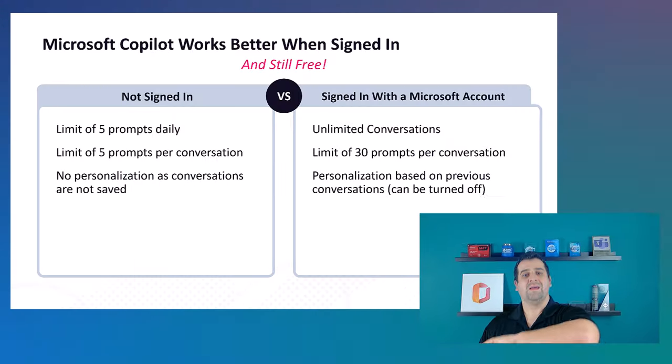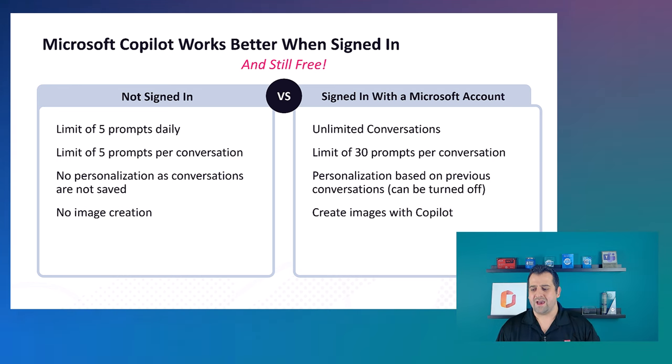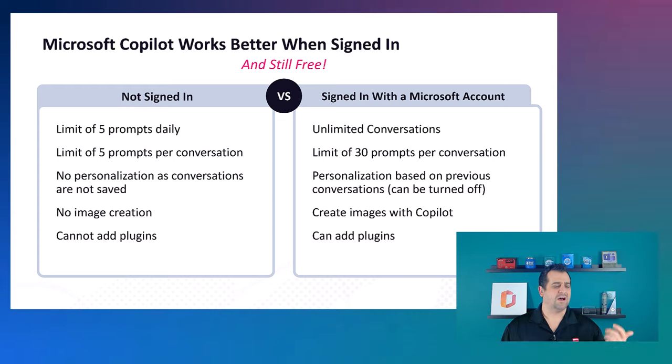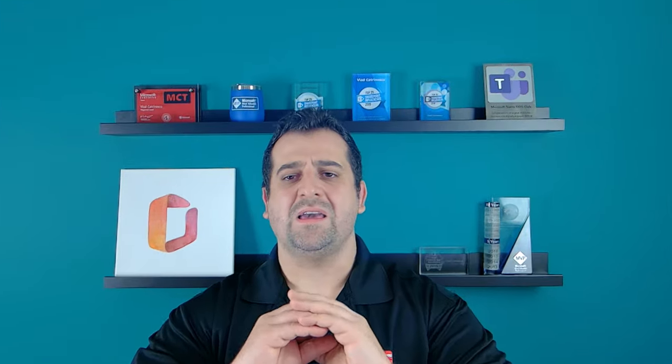Some of you might not be a fan of having your conversation saved in Microsoft Copilot, and that's okay — you can turn it off. If you are not signed in, you cannot create images, but if you sign in with a Microsoft account you can. Without a Microsoft account, you cannot add plugins, which you can do with a Microsoft account. It costs absolutely nothing to create a new Outlook.com email address and a Microsoft account — you can do that in three minutes and unlock so many more features.